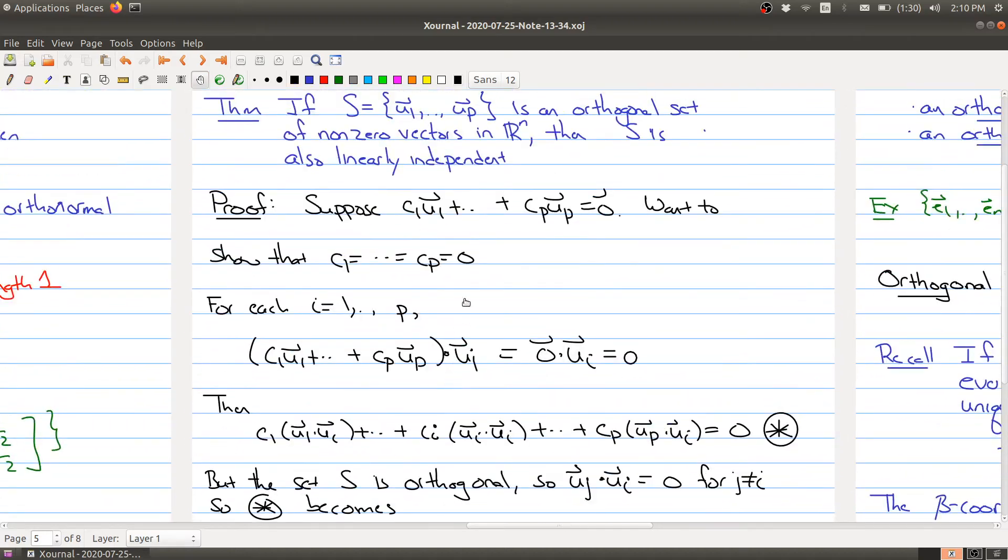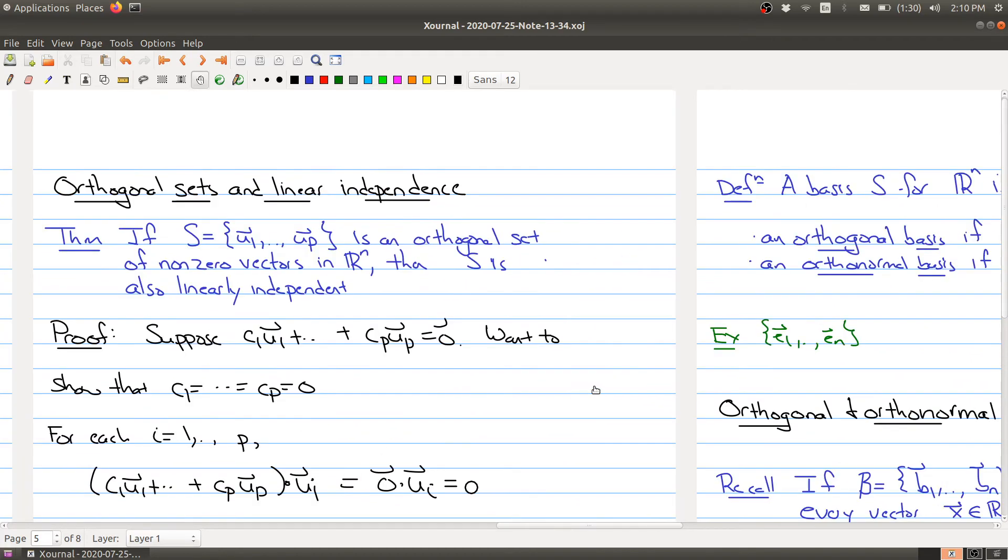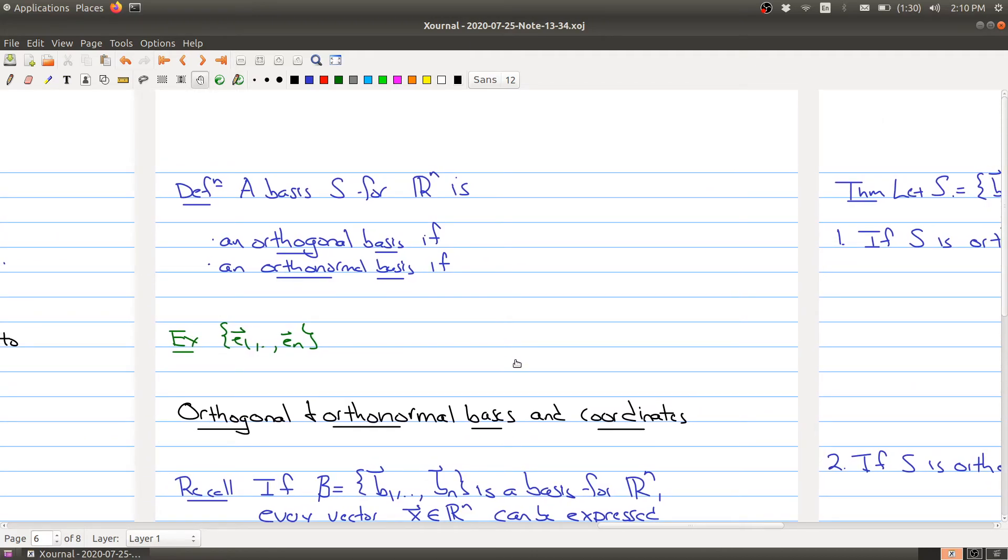So just to go back, what we have here is we take any set of vectors that happen to be orthogonal, and as long as there's no zero vector in there, those vectors are also linearly independent. So let's tie some of this terminology now with the notion of bases.